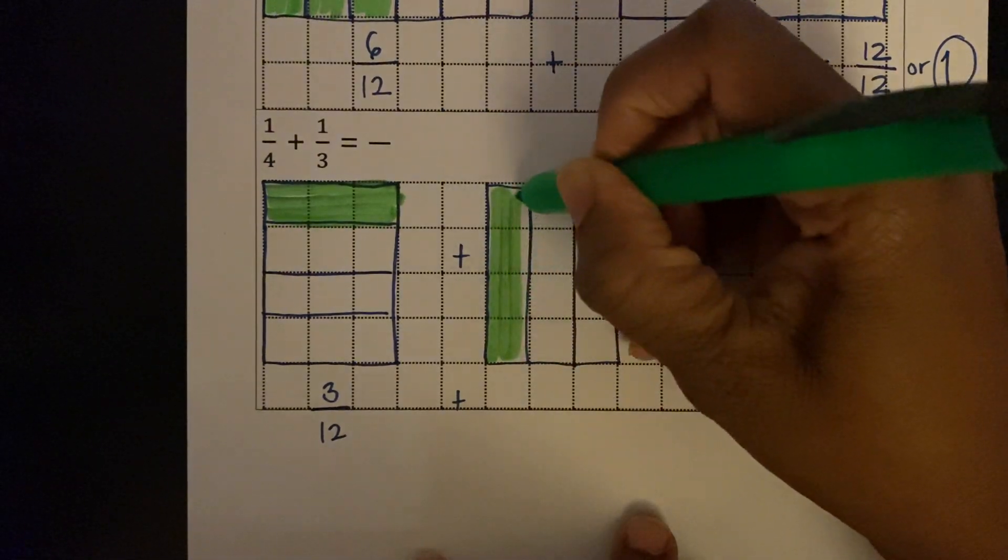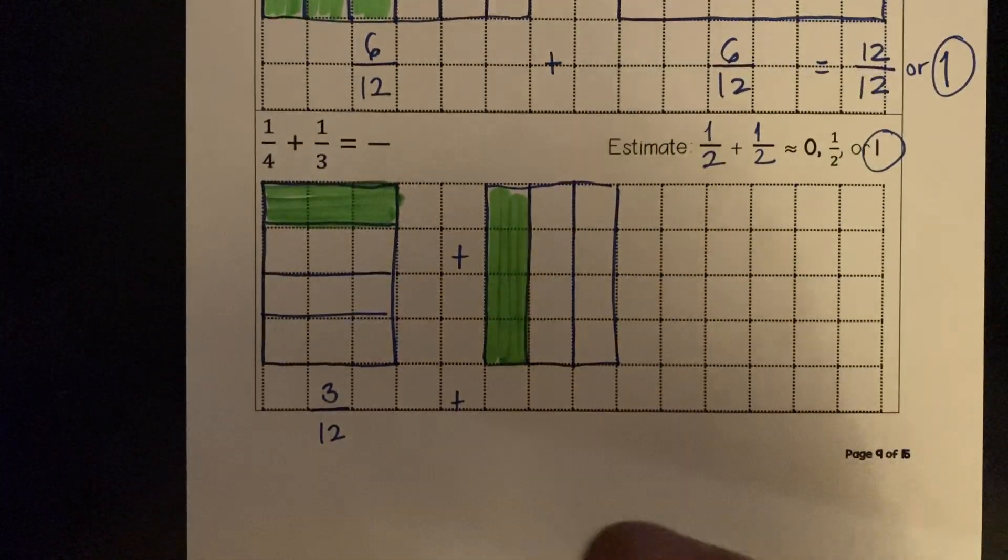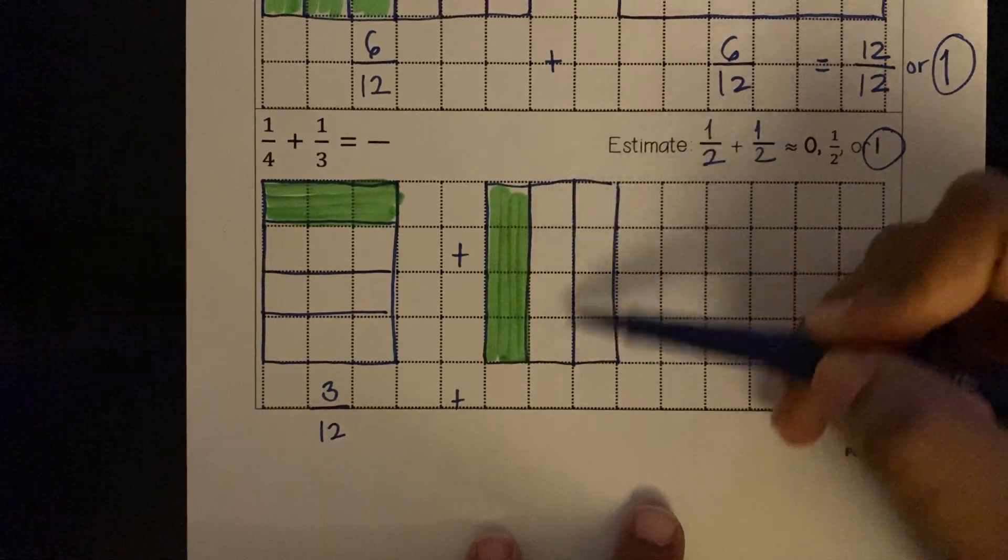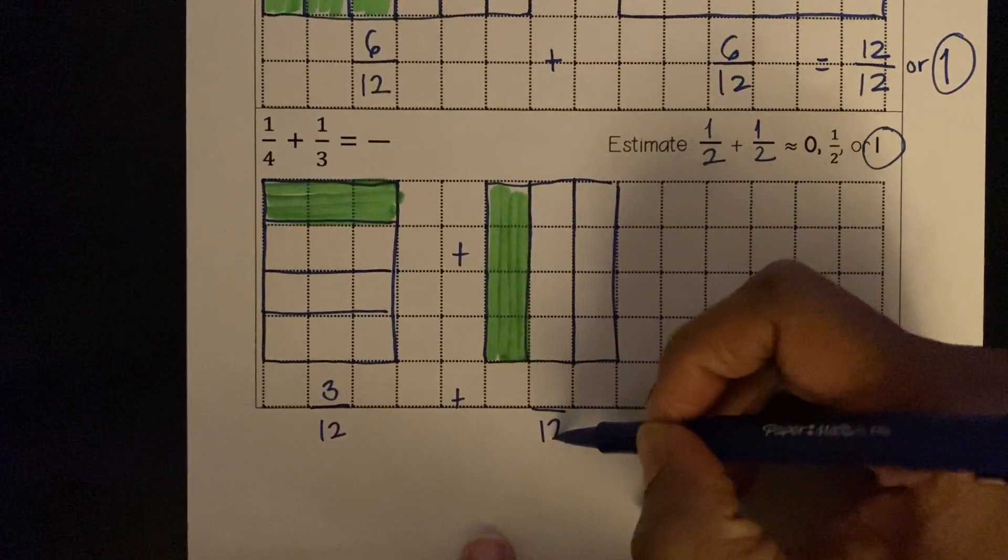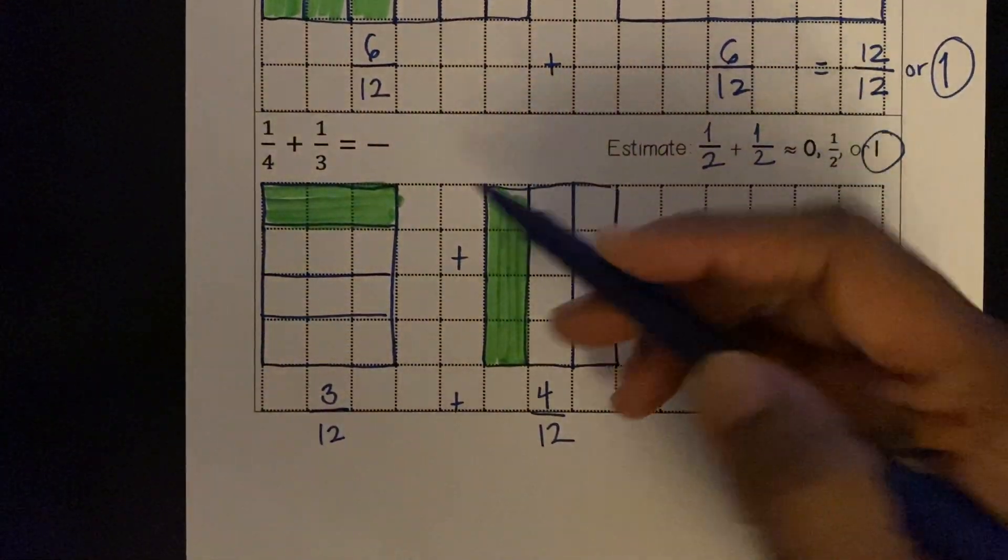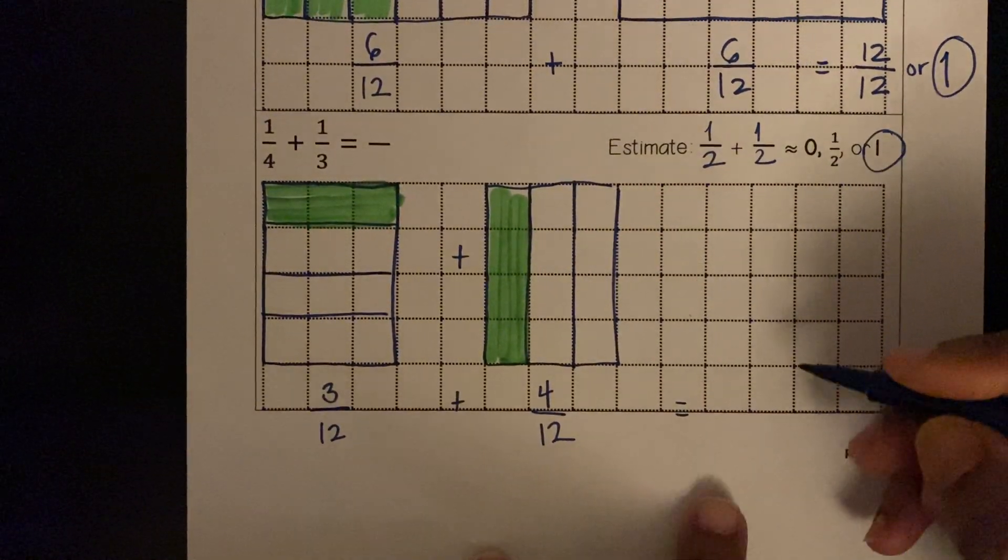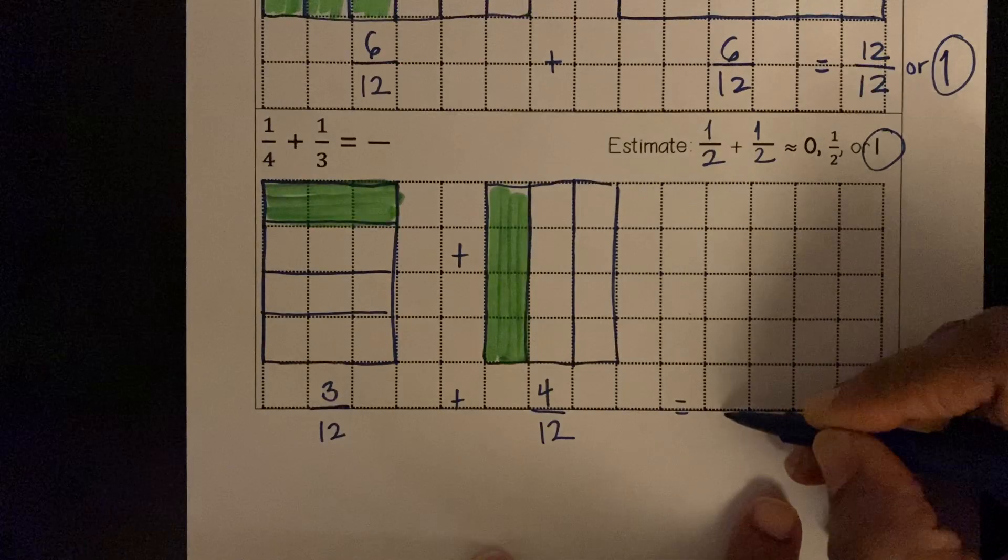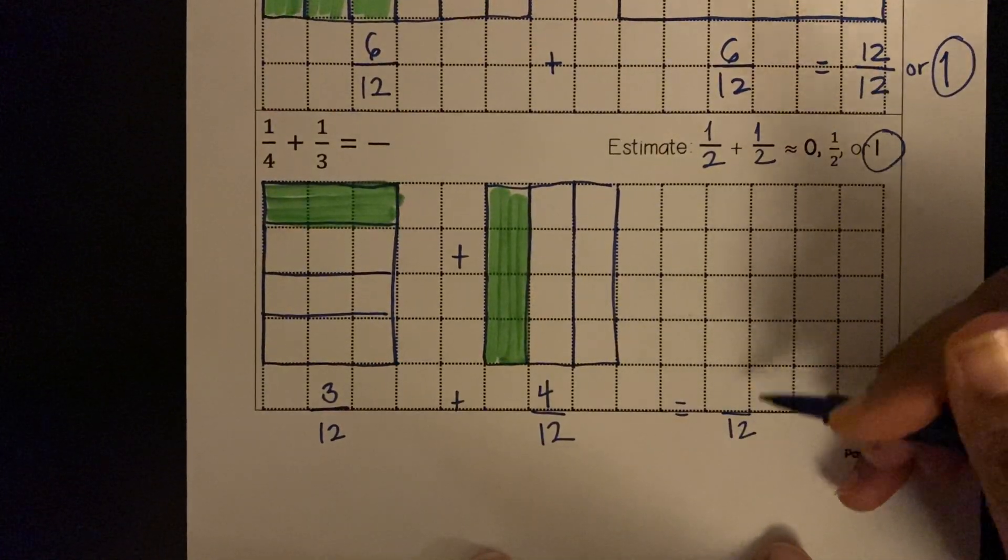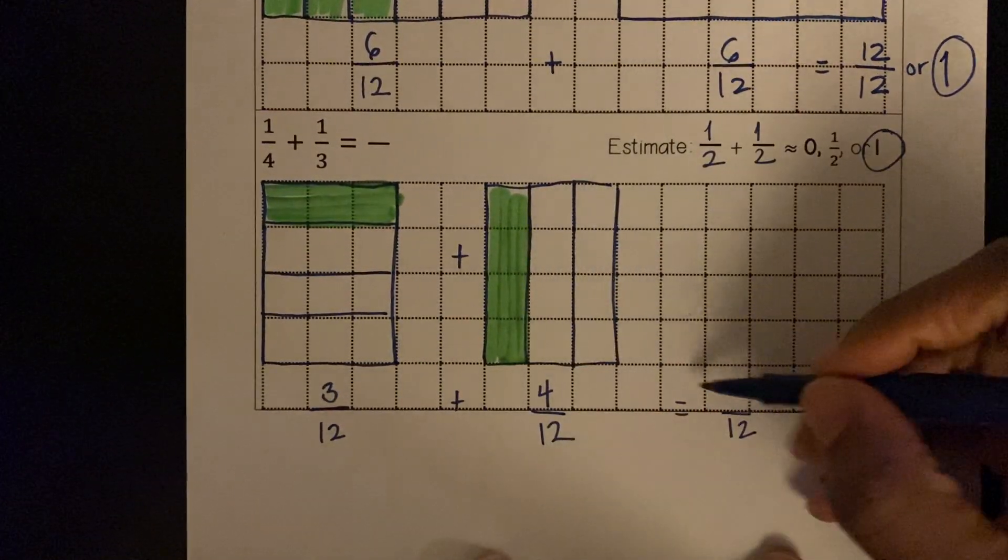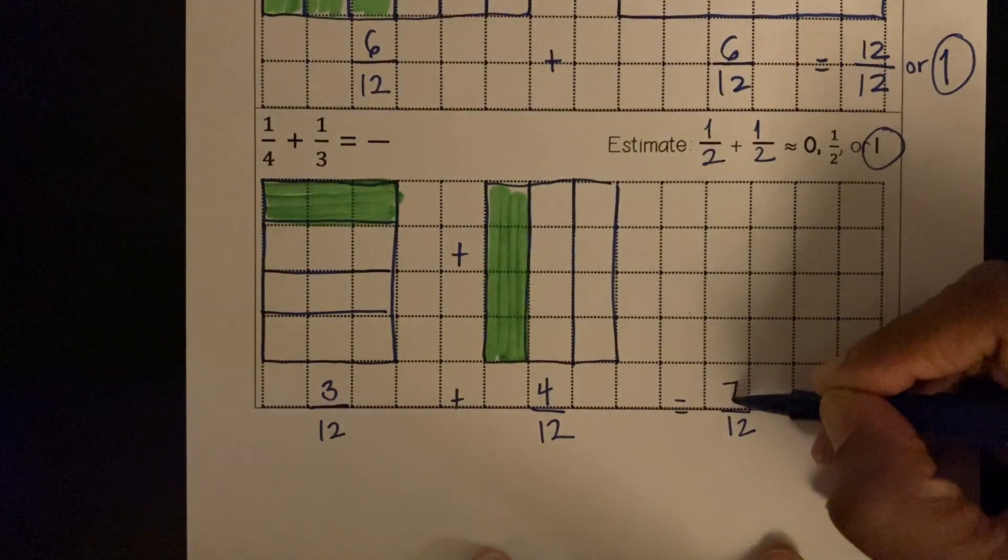One, two, three, four, eight, twelve, four. 1/3 is equivalent to 4/12. We don't ever add denominators. 3 plus 4 is 7.